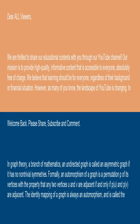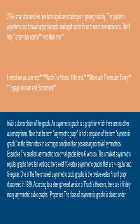In graph theory, a branch of mathematics, an undirected graph is called an asymmetric graph if it has no non-trivial symmetries. Formally, an automorphism of a graph is a permutation P of its vertices with the property that any two vertices U and V are adjacent if and only if P(U) and P(V) are adjacent. The identity mapping of a graph is always an automorphism and is called the trivial automorphism of the graph. An asymmetric graph is a graph for which there are no other automorphisms.